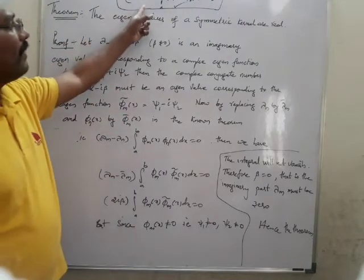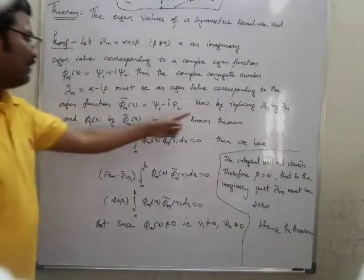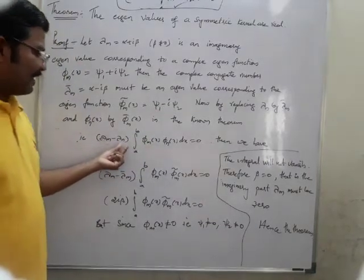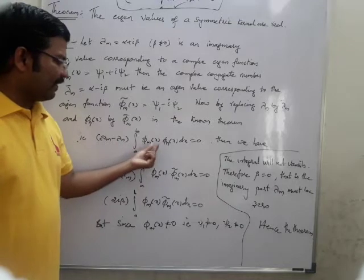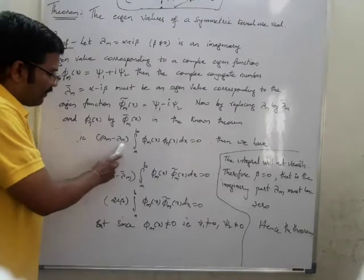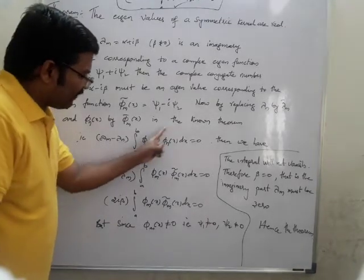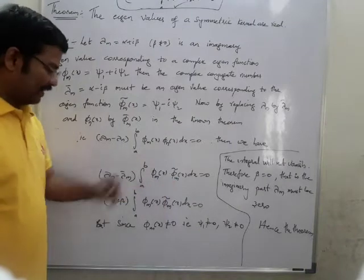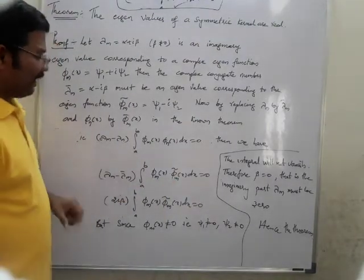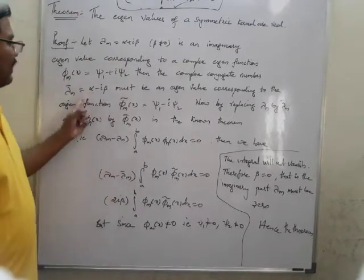If you remember the previous theorem result, it will be used here. By that known theorem, lambda m minus lambda n, with phi m and phi n of x dx equal to 0. Now we are replacing lambda n as lambda m bar and phi n as phi m bar. So lambda m minus lambda m bar: lambda m is alpha plus i beta, and lambda m bar is alpha minus i beta.